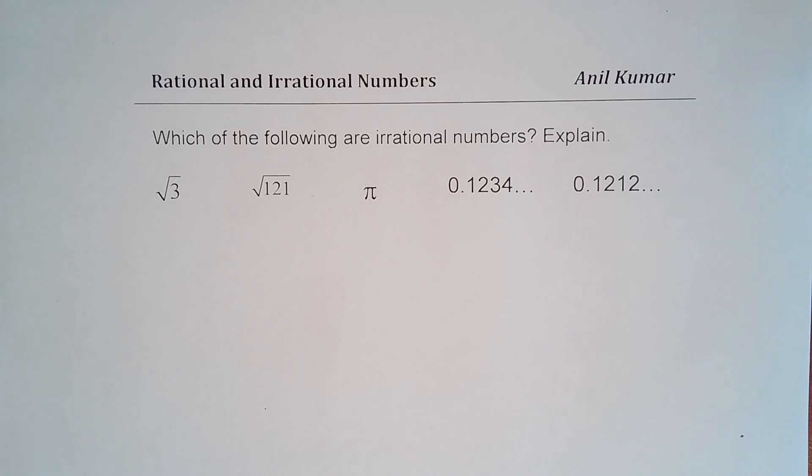0.1234... These ellipses indicate that the series goes on like 5, 6, 7, 8 and so on. And the second number here is also a non-terminating number, 0.1212, but here it repeats 1212.